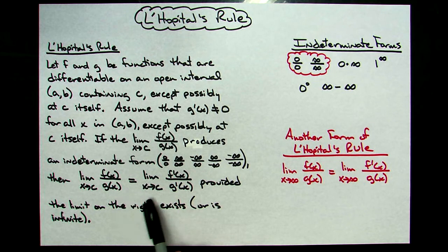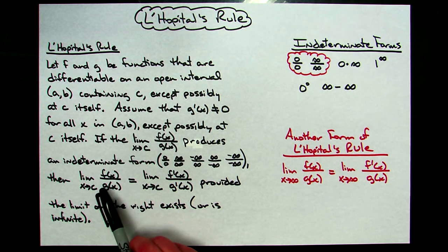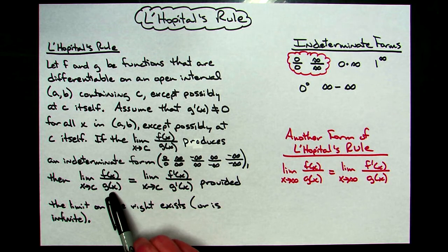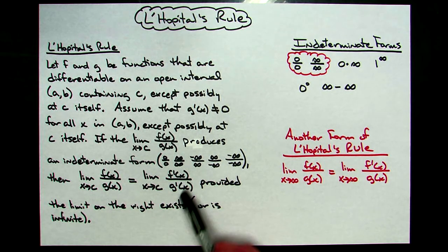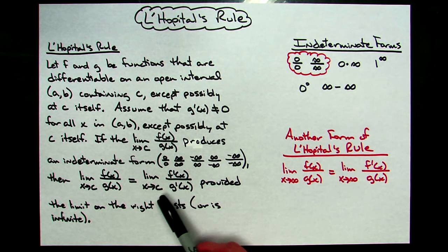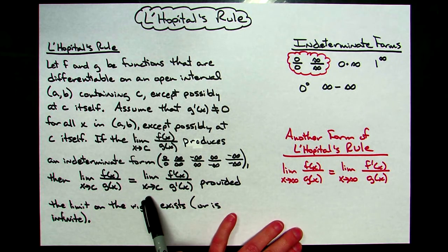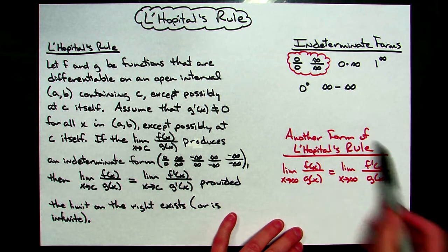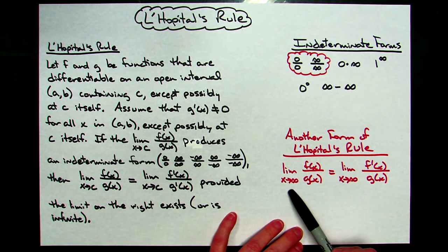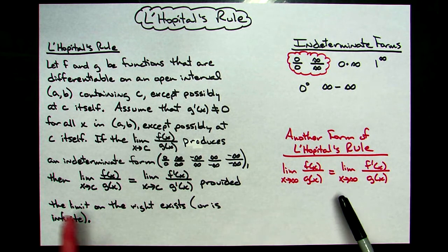So basically, we've got a quotient, and we plug in via direct substitution and get an indeterminate form. Then we take the derivative of the top, take the derivative of the bottom, and then take the limit again, and hopefully that's going to help. This definition is set up for as x approaches c, a constant, however you can apply it for when the limit is approaching infinity as well — the exact same thing applies. It doesn't have to be a constant; it can be infinity.